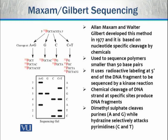Chemical cleavage of DNA strands at specific sites produces DNA fragments. The chemicals used are dimethyl sulfate and hydrazine. Using them, cleavage occurs at specific points and specific fragments are produced.